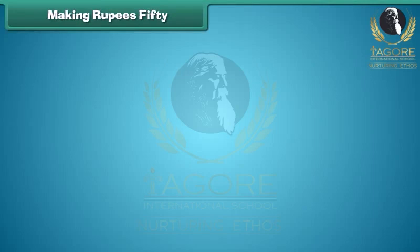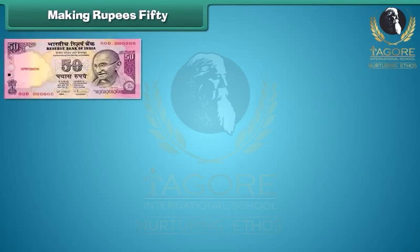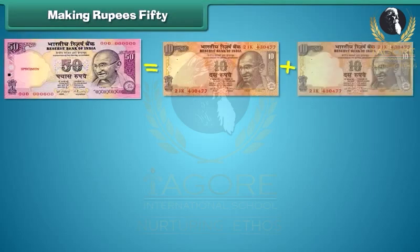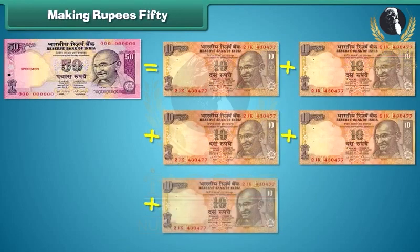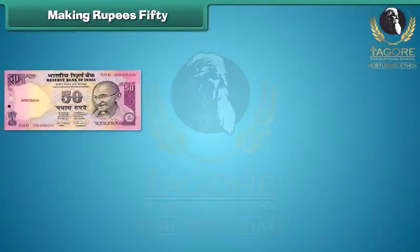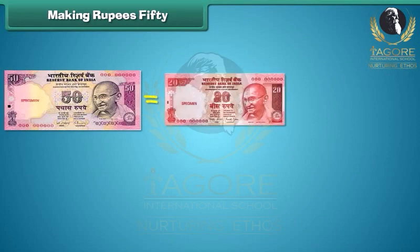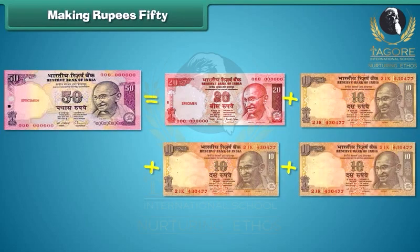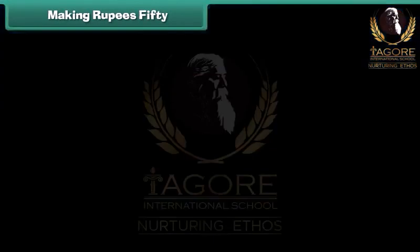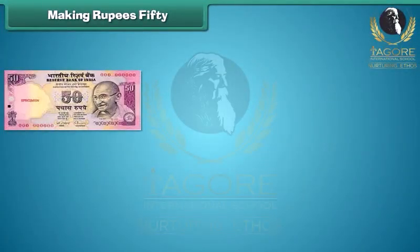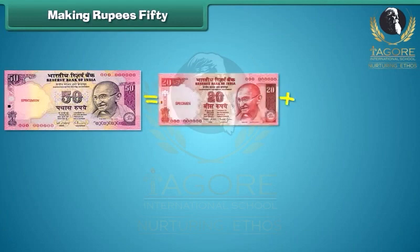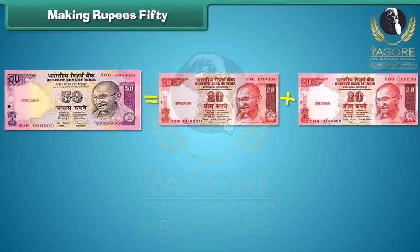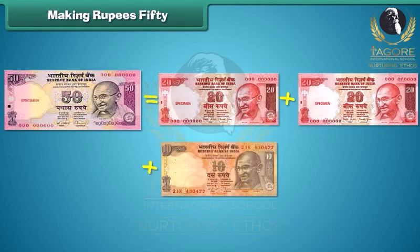Similarly, a 50 rupees note is equal to the sum of five 10 rupee notes. A 50 rupees note is equal to the sum of one 20 rupees note and three 10 rupees notes. A 50 rupees note is also equal to the sum of two 20 rupees notes and one 10 rupees note.